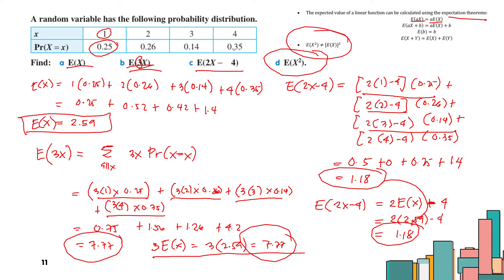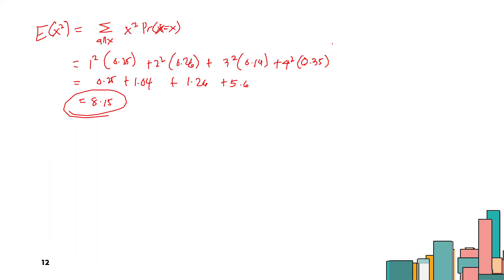Take note that the expectation theorem is applicable for linear functions only. For E[X²], you cannot simply square E[X], because (E[X])² = 2.59² would not give 8.15. According to the rule, E[X²] ≠ (E[X])².